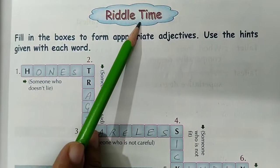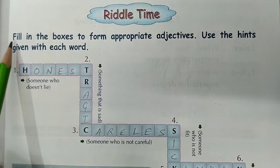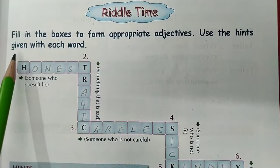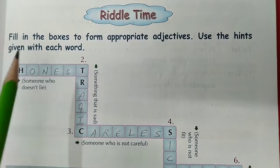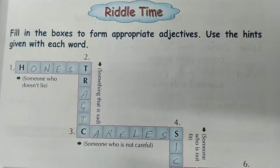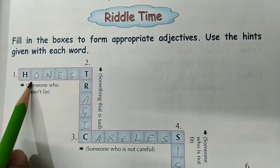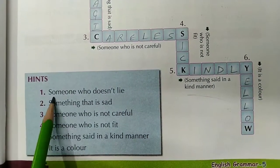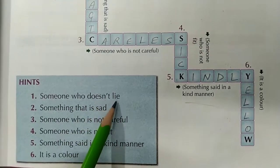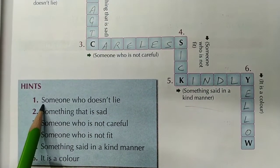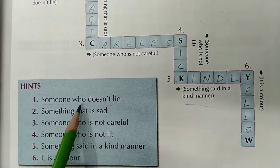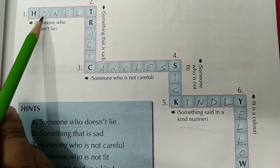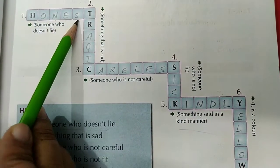Now it's riddle time. Fill in the boxes to form appropriate adjectives using the hints given with each word. First hint: someone who doesn't lie — meaning someone who does not tell lies. So the word we write here is Honest — H-O-N-E-S-T.